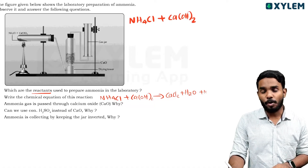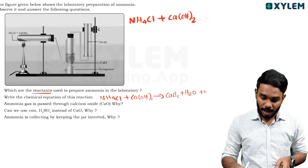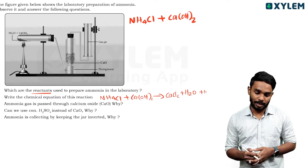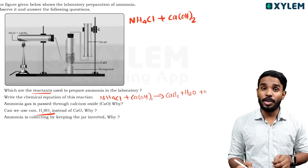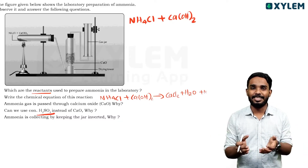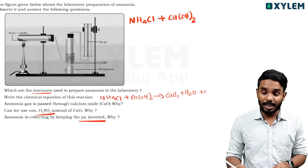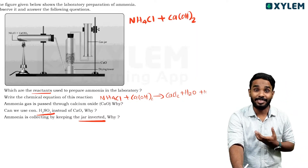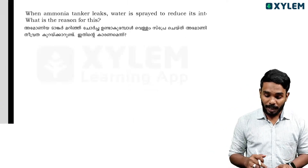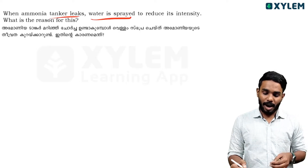Ammonia gas is passed through calcium oxide to absorb moisture — calcium oxide acts as a drying agent. H2SO4 can also absorb moisture, but it is acidic and would react with ammonia base, so it cannot be used. Ammonia gas is then collected by an inverted jar. When an ammonia tank leaks, water is sprayed because ammonia is highly soluble in water.